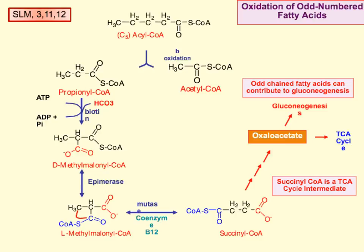Odd-chain fatty acids can contribute to gluconeogenesis. Whenever you have a fatty acid longer than 5 carbons, it's going to go through the beta-oxidation that we showed in the previous video, until it gets down to a 5-carbon acyl-CoA.